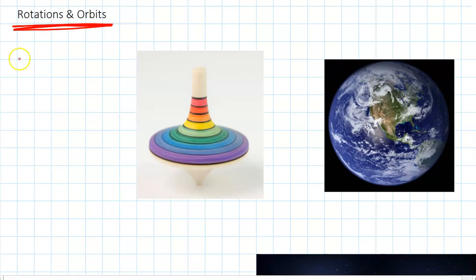Okay, so the first word we need to talk about is rotation. And then we'll also talk about orbits after that. So firstly, a rotation, when we're talking about objects in space, it means exactly the same thing as when we talk about it for normal objects. So if something rotates, it just means it spins.